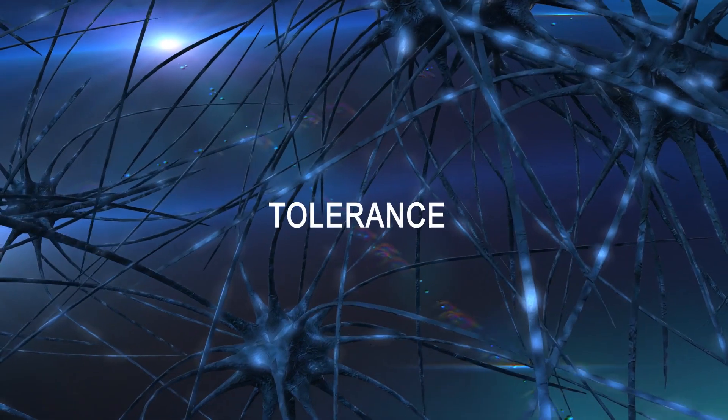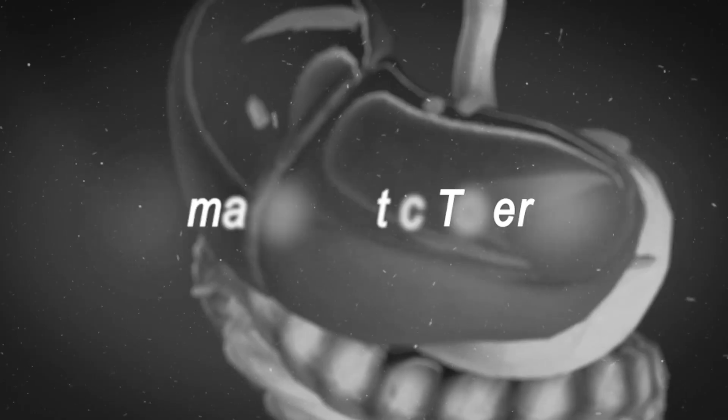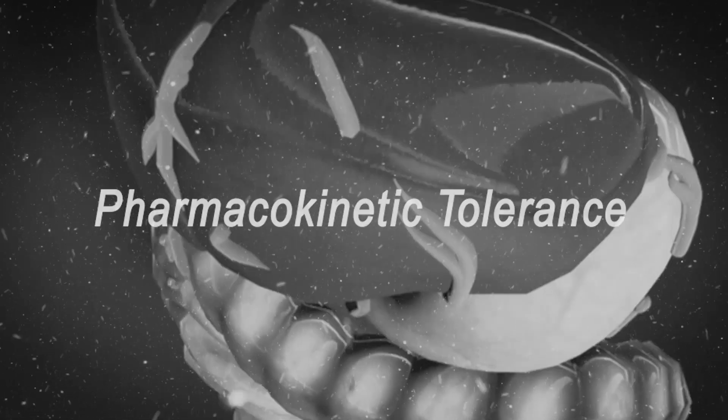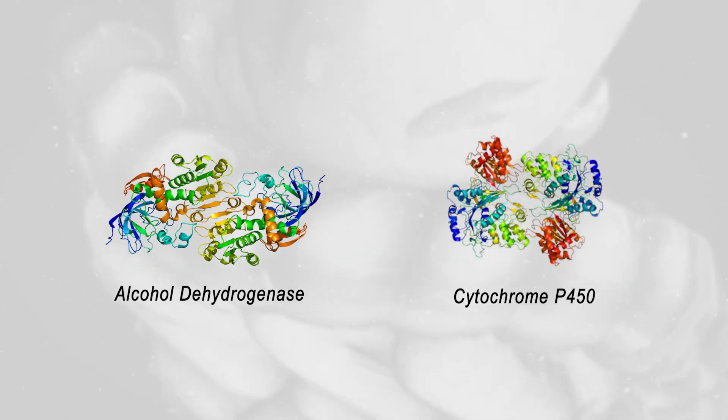Tolerance is primarily found in two distinct categories, pharmacodynamic and pharmacokinetic. Pharmacokinetic tolerance primarily takes place in the liver where there are certain enzymes such as alcohol dehydrogenase or cytochrome P450 which metabolize certain substances over a longer period of time.